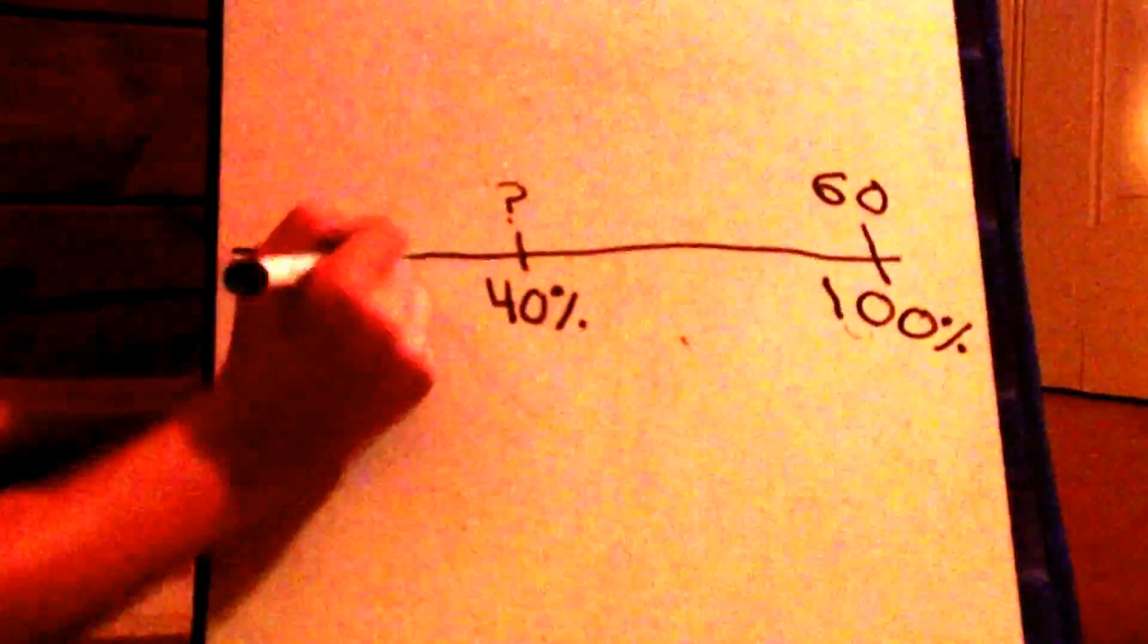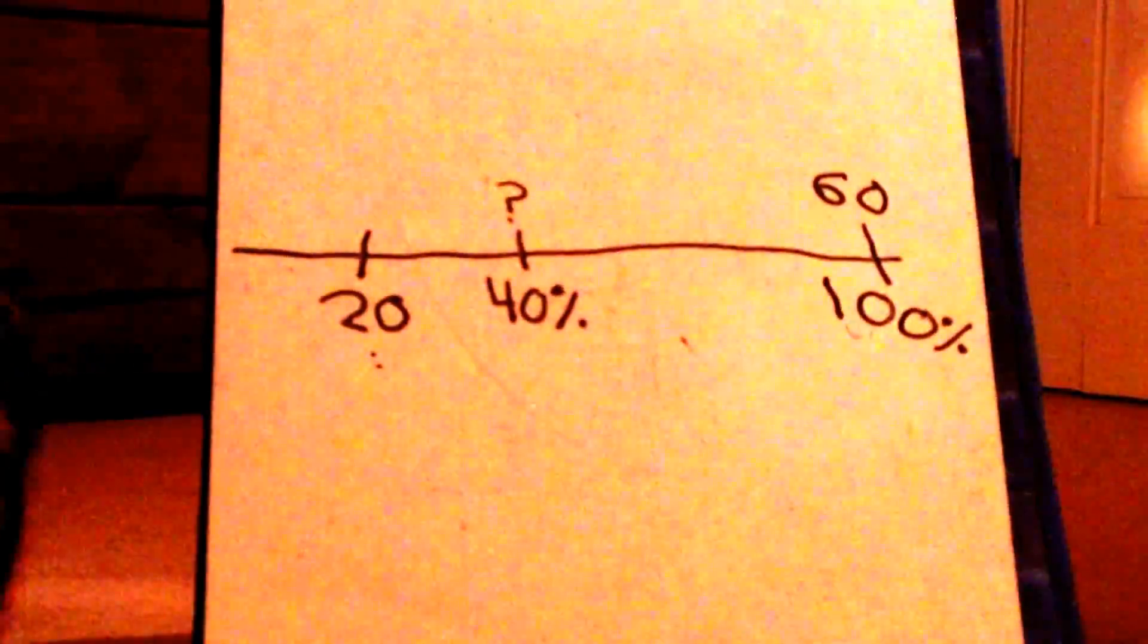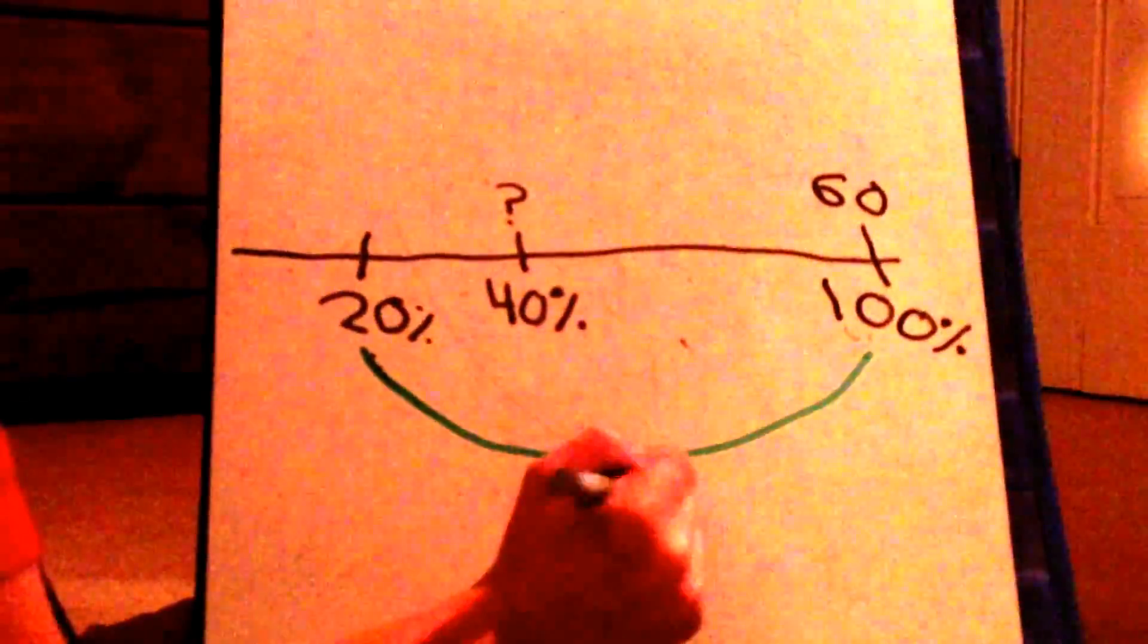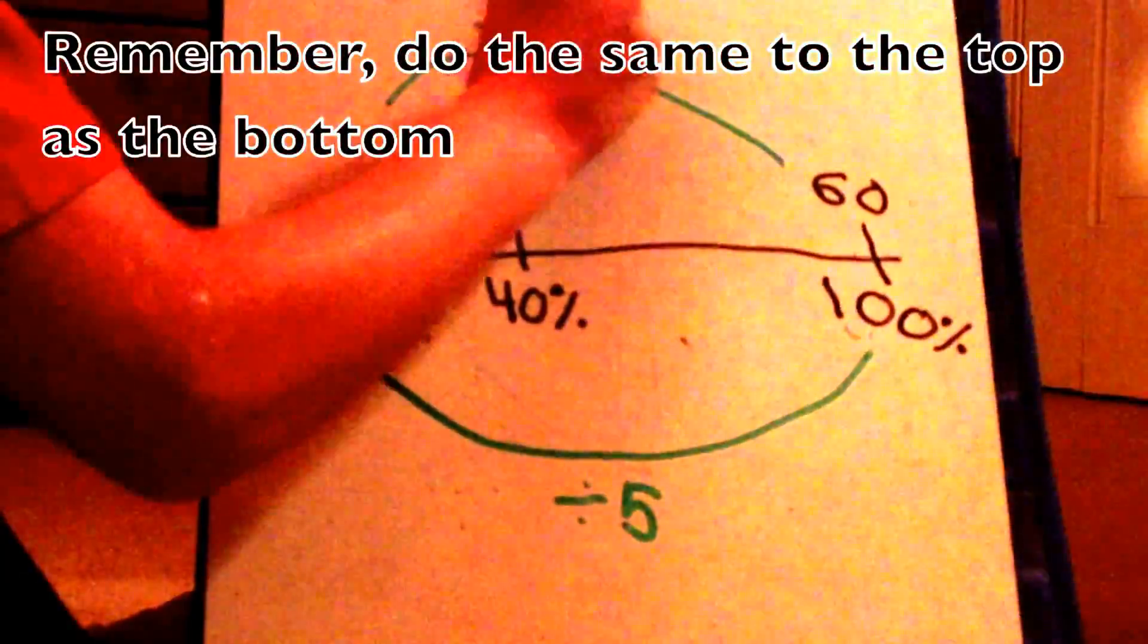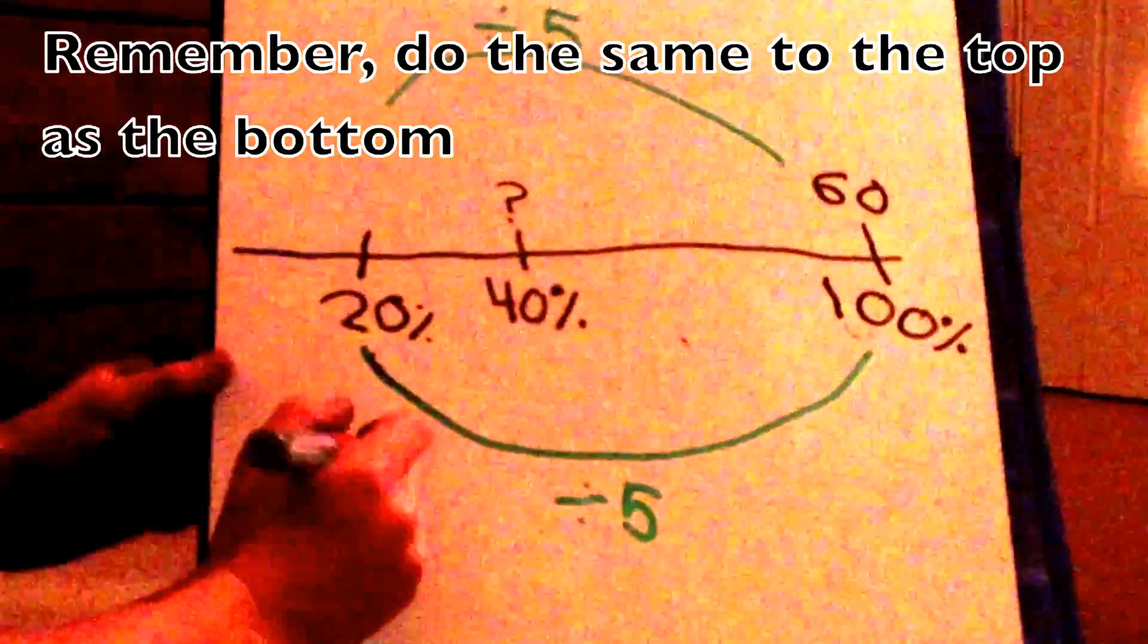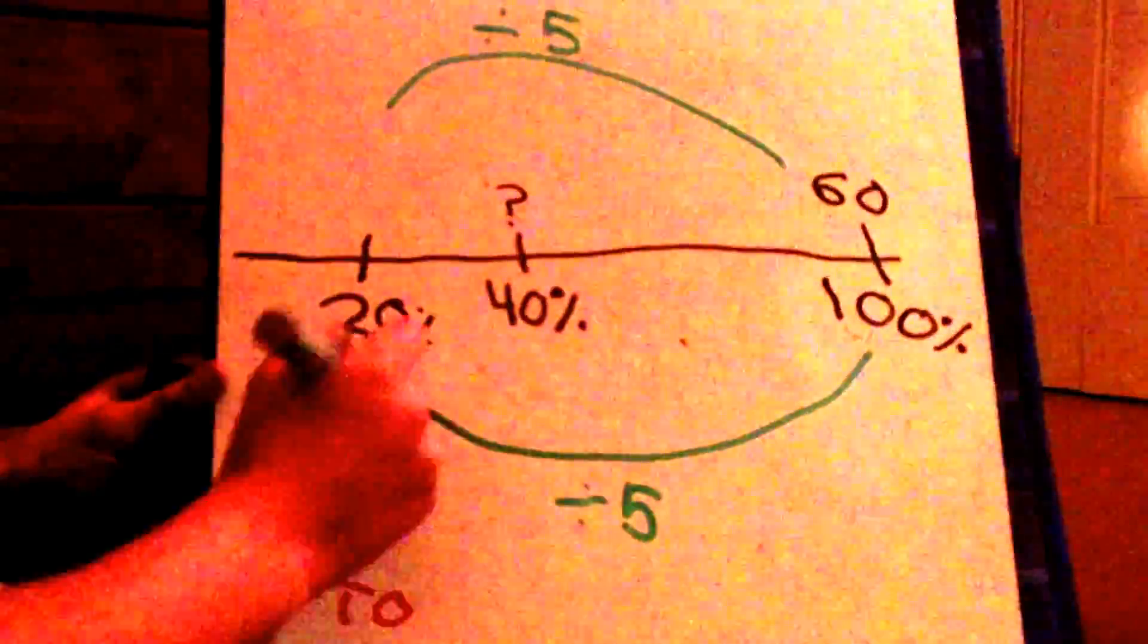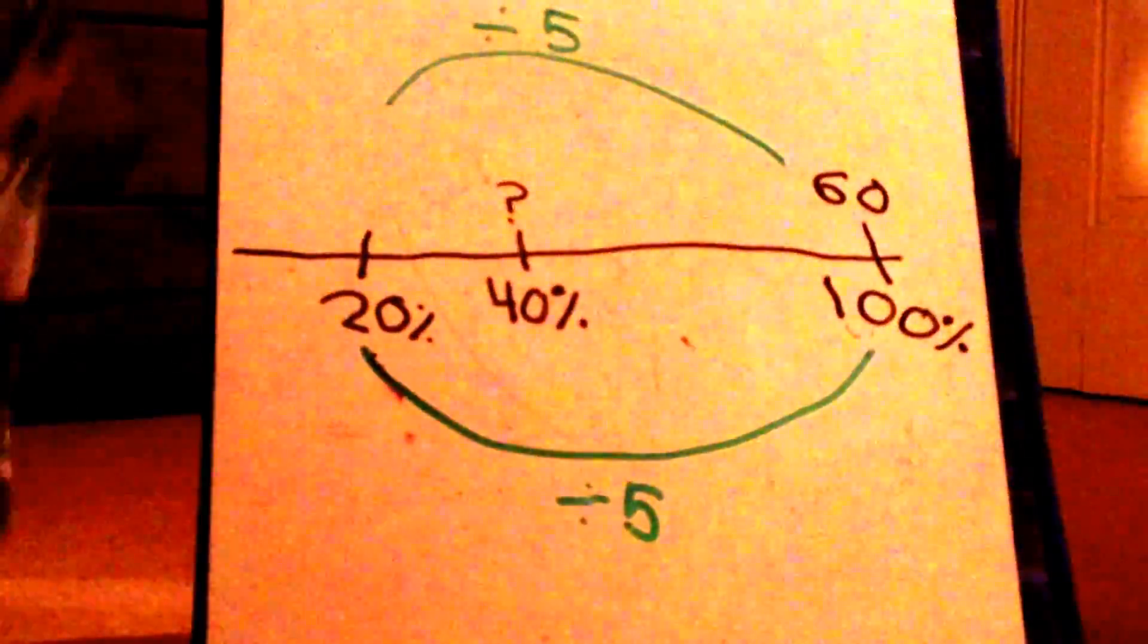So what we have to do, is since we can't divide 100 by anything to get 40, we can divide 100 by something to get 20, which is 5. So you notice I put 100 divided by 5 is 20. So we have to do the same thing to the top number, so 60 divided by 5, in this case, is 12. I just did the division out to show you. So it's 12.